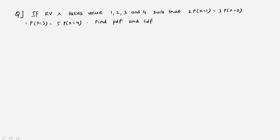In this video we will look at a one-dimensional random variable that is discrete — not continuous — so the formulas are different. This is a very interesting question, and I guarantee if you watch till the end you will gain more knowledge. The question: if a random variable X takes values 1, 2, 3, and 4 such that its probabilities satisfy a given equation.